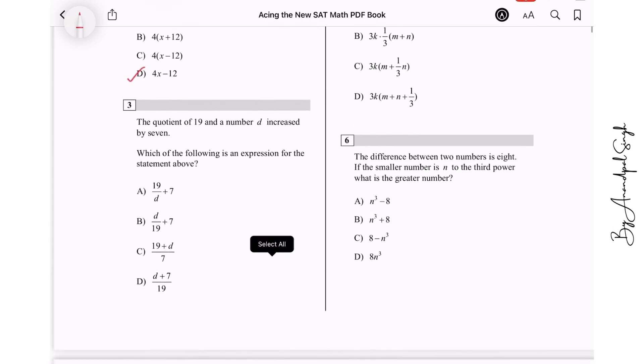The quotient of 19 and a number D, 19 and a number D means 19 over D, increased by 7. It means the answer is A.